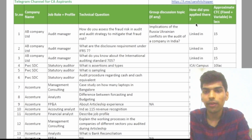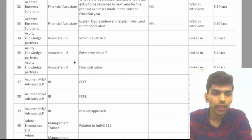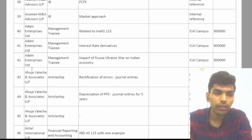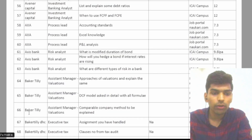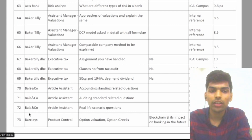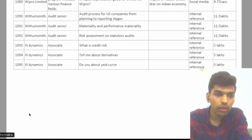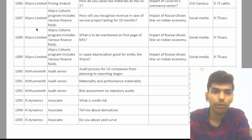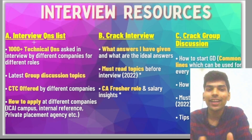The fourth column is the group discussion topic — if there is a group discussion in the selection process, what the topic was, how the candidate applied, and what the approximate CTC is. You can search for your relevant company — for example, Equity Knowledge Partners, Aidel International LLP, Anand Rathi, Access Bank — and know what technical questions were previously asked to candidates. In total, there are almost 1095 questions from various companies like Wipro and others.